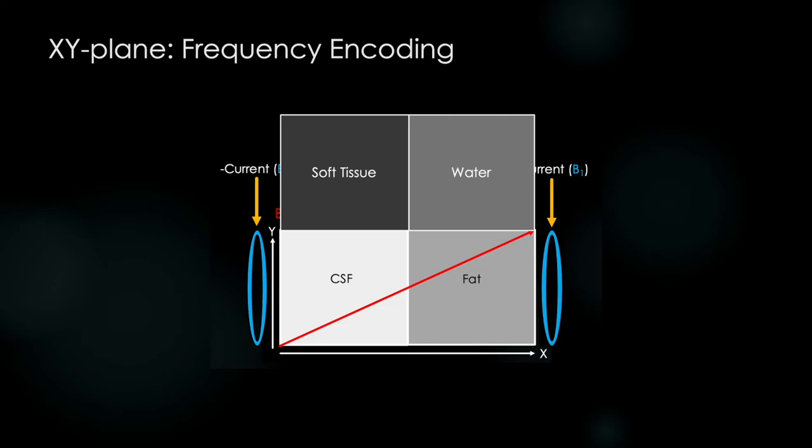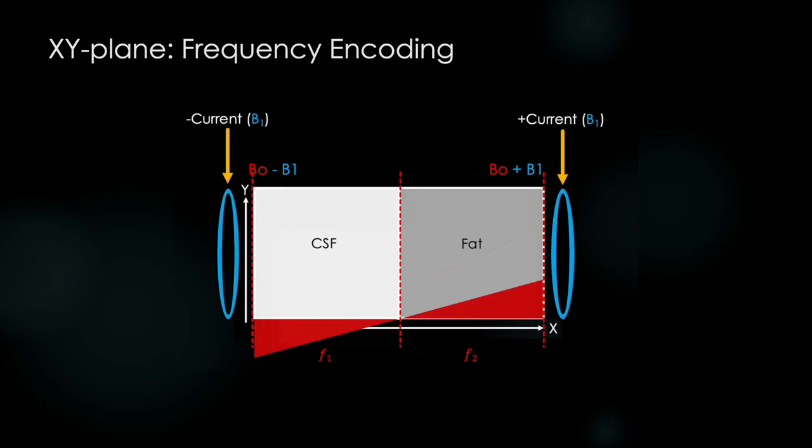But as we will see in our next lecture, this gets much more complicated when adding another dimension. And one final point, just like our slice select gradient, when we apply our frequency encoding gradient, we can't perfectly fit a single frequency to a single voxel.